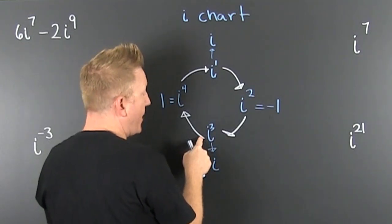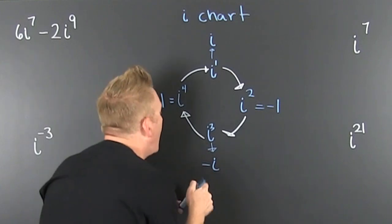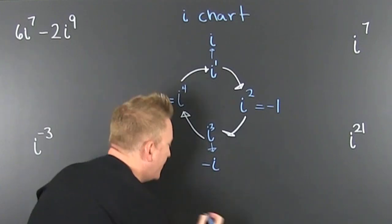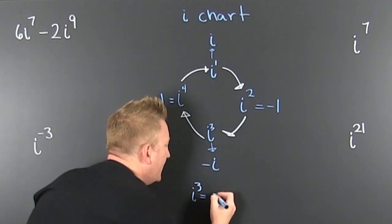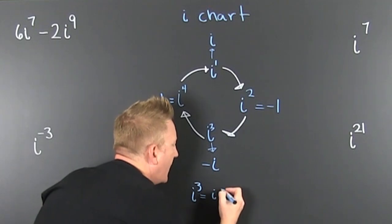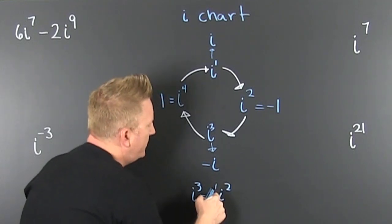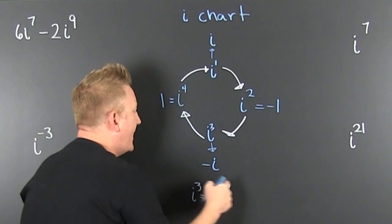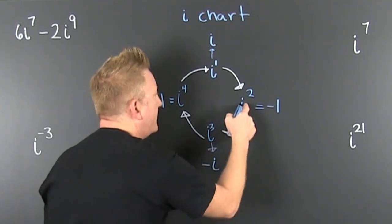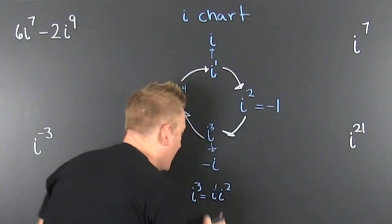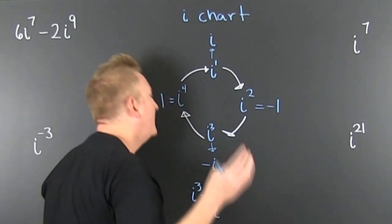i to the third power — well, that's minus i. Why? Because i to the third is literally i times i squared. Because you get the same base and you're multiplying, you add the exponents, and i squared evaluates to minus one. That's why it's minus i.